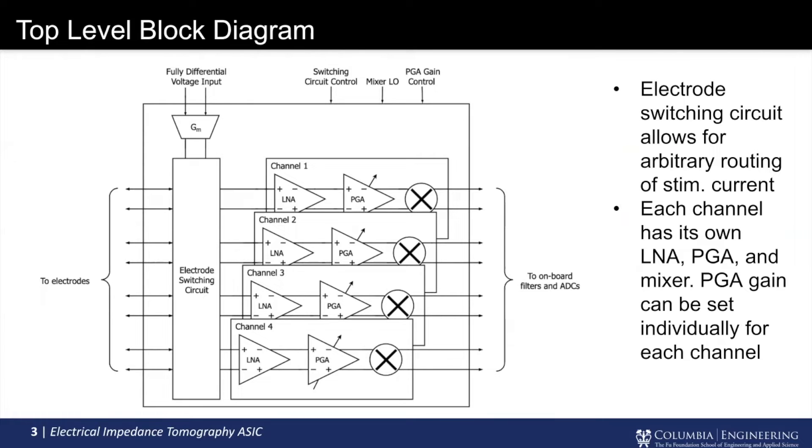And then connected on the other side of the electrode switching circuit are four channels, which are identical. Each one of them has an LNA, which has a gain of 20 dB, a PGA, which has a gain from 0 to 42 dB in 6 dB steps, and a mixer. And then after it goes off of the chip, it goes to the onboard buffers, filters, and then ADCs.